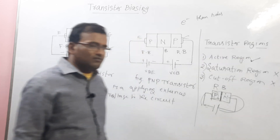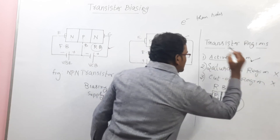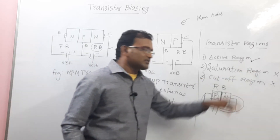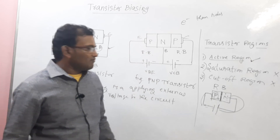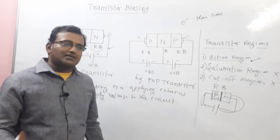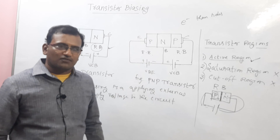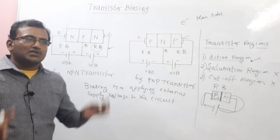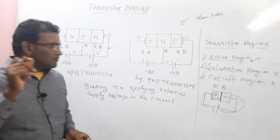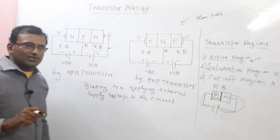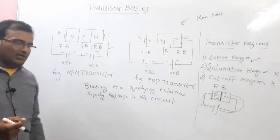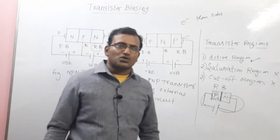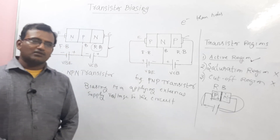In transistor regions, which one is suitable for transistor biasing? Only active region. Active region consists of two supply voltages — one is forward bias and the other one is reverse bias. Whereas saturation region has both junctions forward biased, and cutoff region has both junctions reverse biased. Among these three regions, only active region is preferred for transistor biasing circuits. Biasing is applying external supply voltage to the circuit. If you have any doubts, please drop a message in the comment box. Thank you for watching.